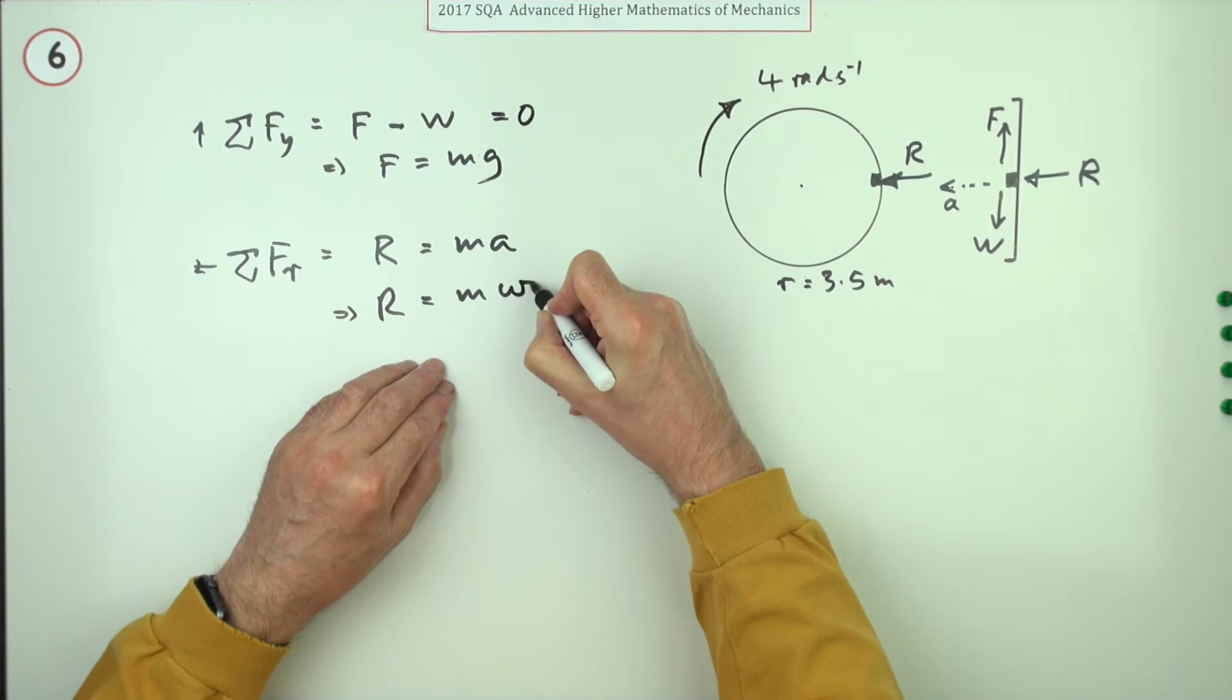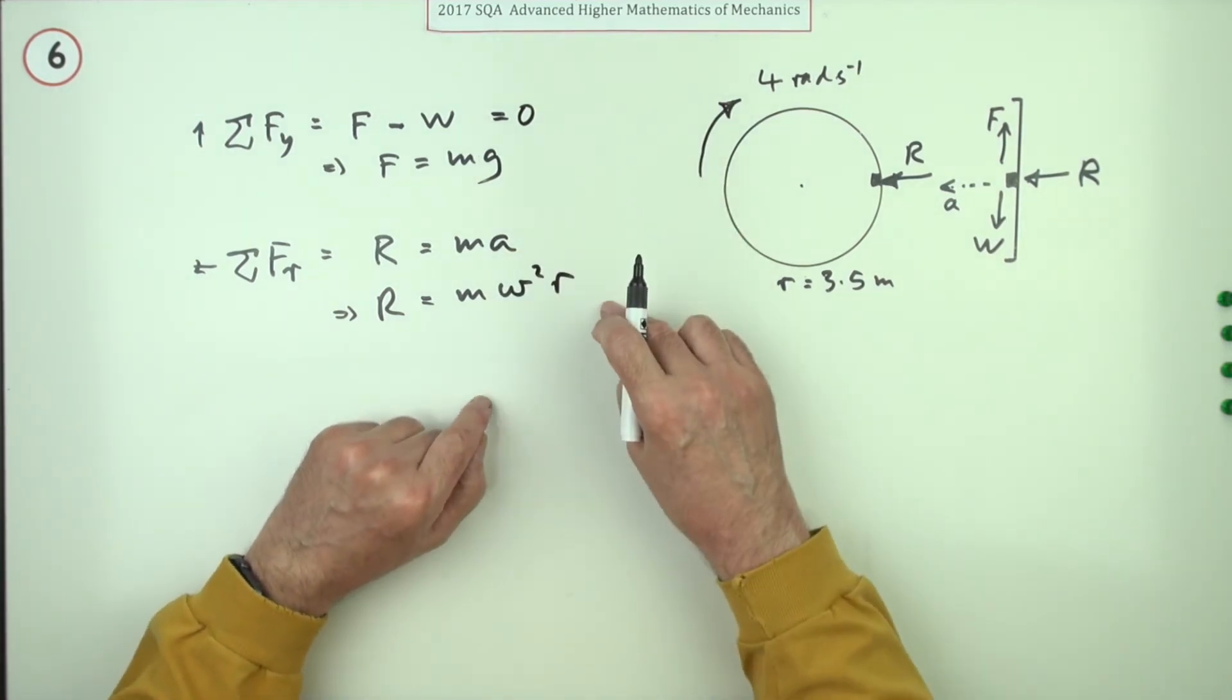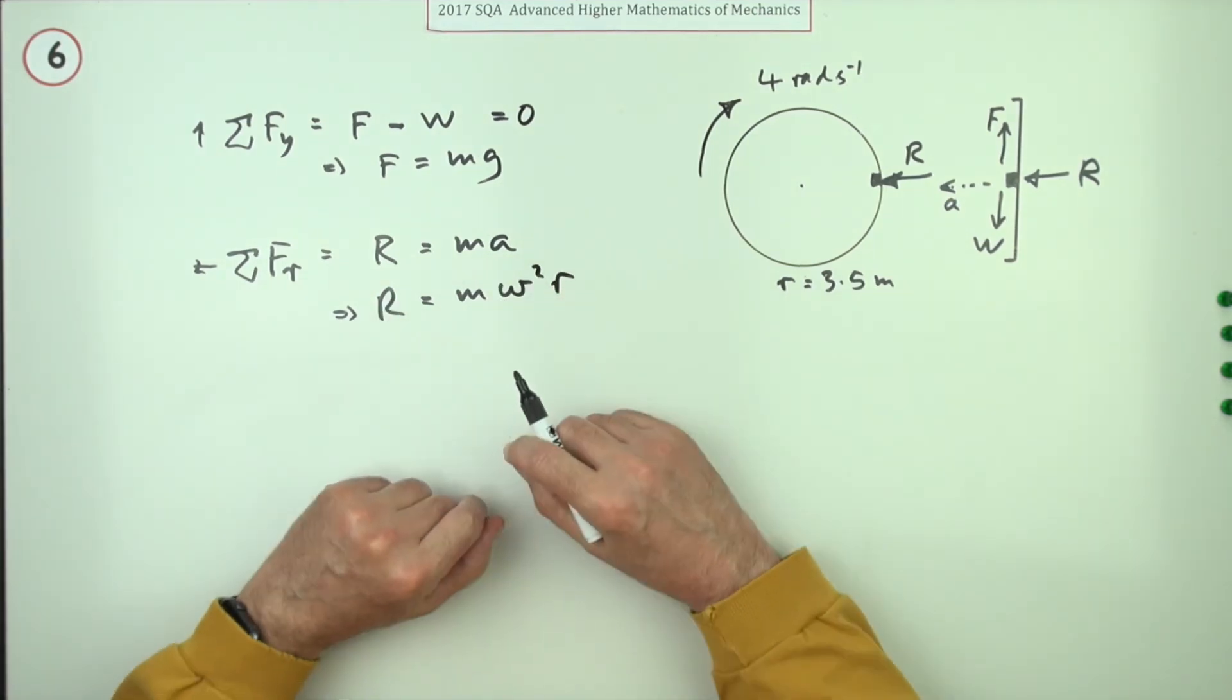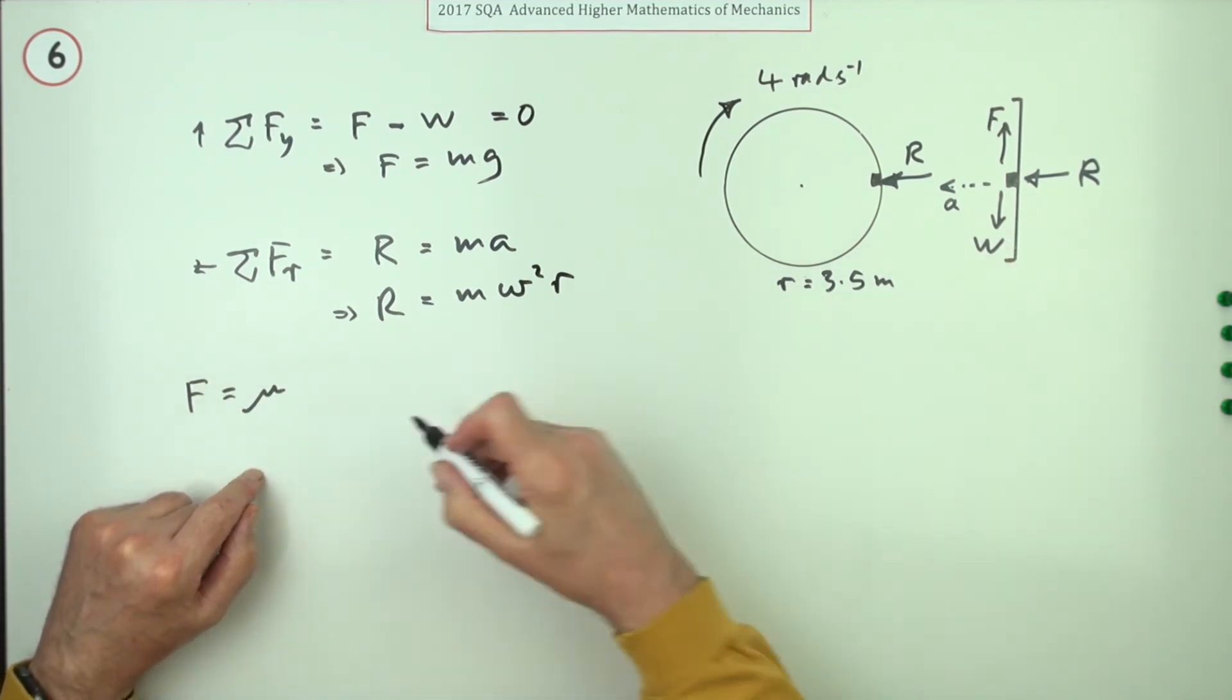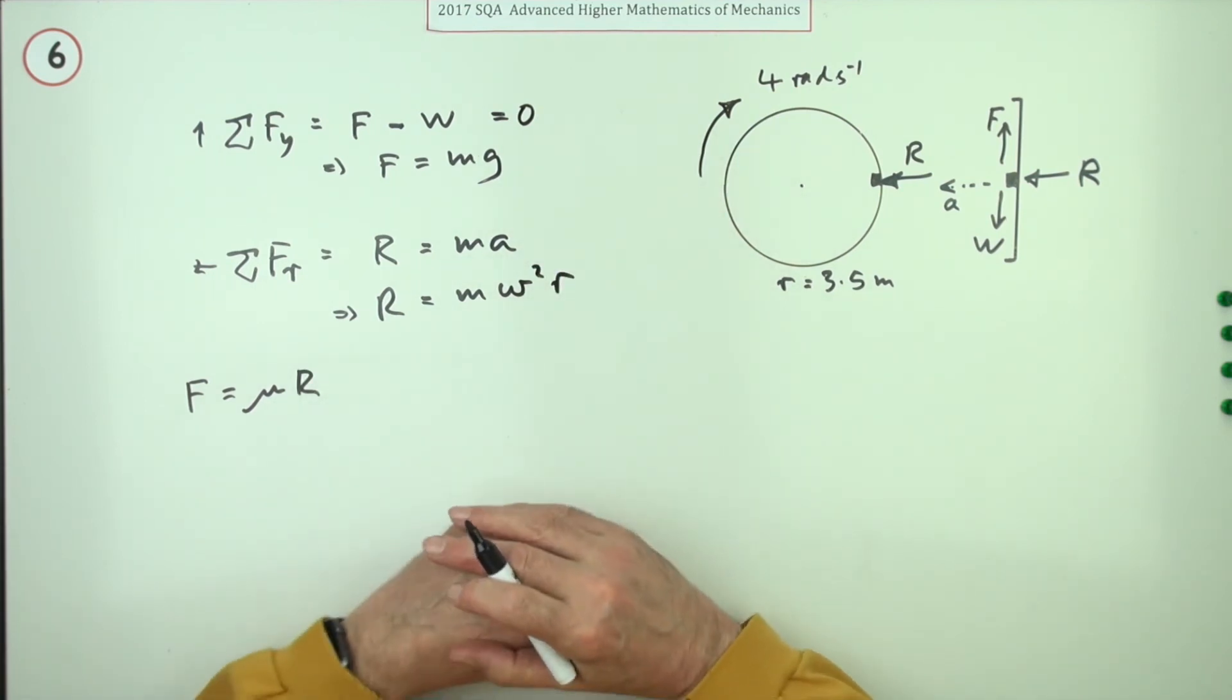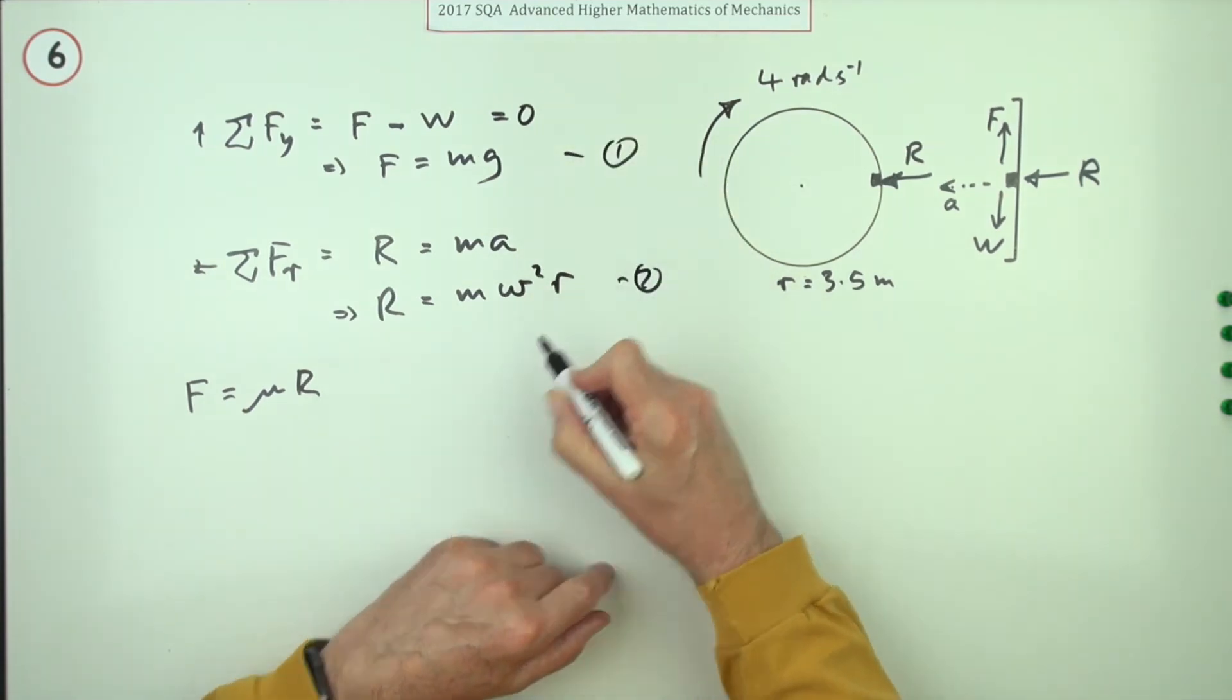Now those aren't the two equations quite yet because there's one more connection - the coefficient of friction to pop in somewhere, and that comes from this: the force of friction will be μ, the coefficient of friction, times that normal reaction times R. And it's these three parts that you're going to put together.